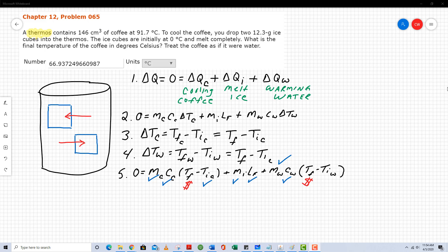Chapter 12, Problem 65. You have a thermos of hot coffee and you drop two ice cubes into it to cool it down. If the ice cubes melt completely, what's the final temperature of the coffee?